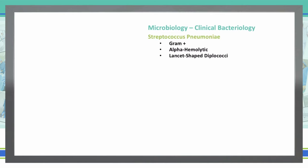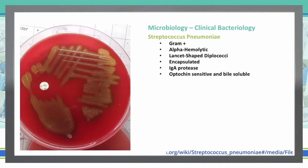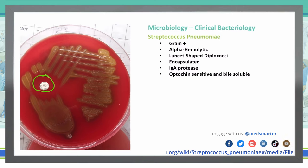Strep pneumoniae under a microscope will look like lancet-shaped diplococci. It is encapsulated, and it does have an IgA protease ability. It is also optochin-sensitive and bile-soluble. As you see here in this picture, this white disc is an optochin disc used in the laboratory. It is placed on the blood agar where the bacteria are smeared, and if there is no growth around that disc, that means optochin is able to destroy the Streptococcus pneumoniae bacteria, making it optochin-sensitive.